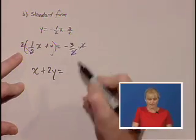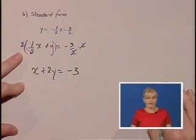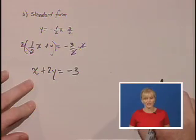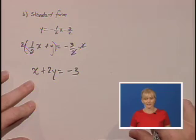On the right hand side, the denominator cancels out and we're left with -3. So our standard form is x + 2y = -3.